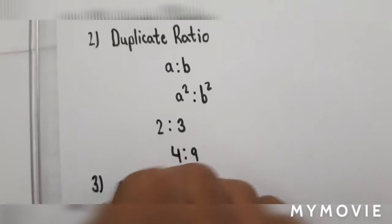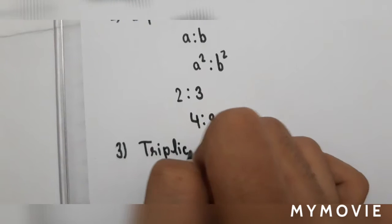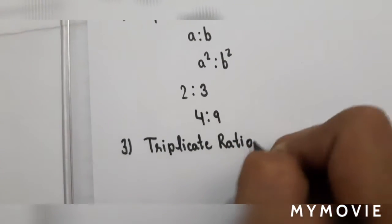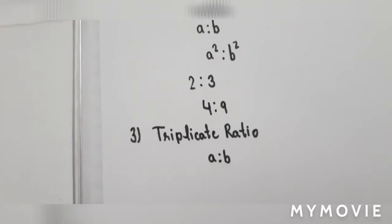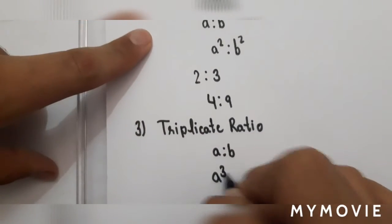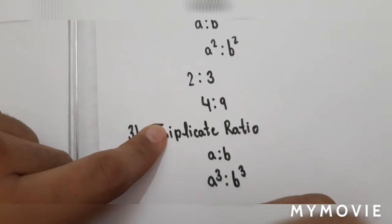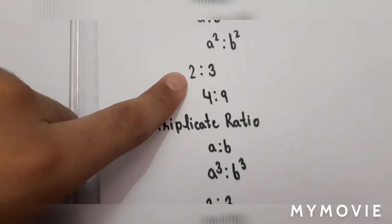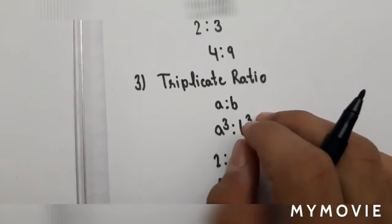Third comes triplicate ratio. If you are provided with A:B, you will get the answer as A³ : B³. For example, 2:3 means 2³ is 8 and 3³ is 27, so the answer is 8:27. You should cube the numbers which you are provided.